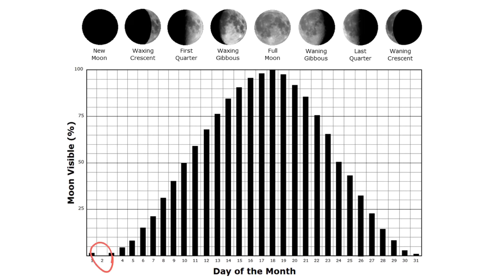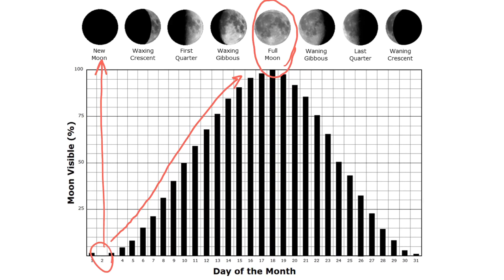When none of the moon is visible, it's called a new moon. Then each night more and more of the moon becomes visible until eventually the entire moon looks lit up, and we call that a full moon. And then less and less of the moon becomes visible each night until the pattern starts over. At the beginning of the next month, we would expect to see the next new moon.